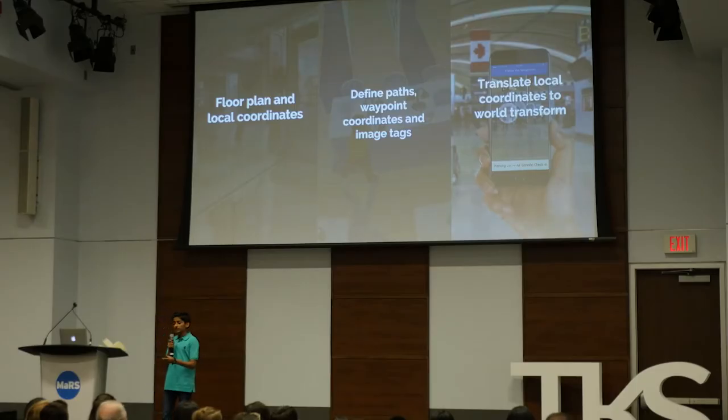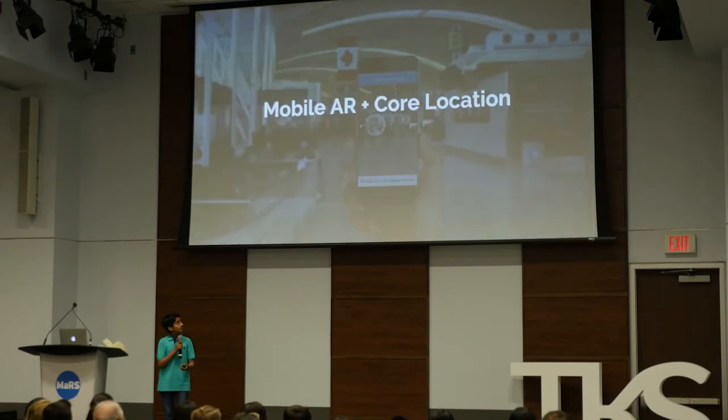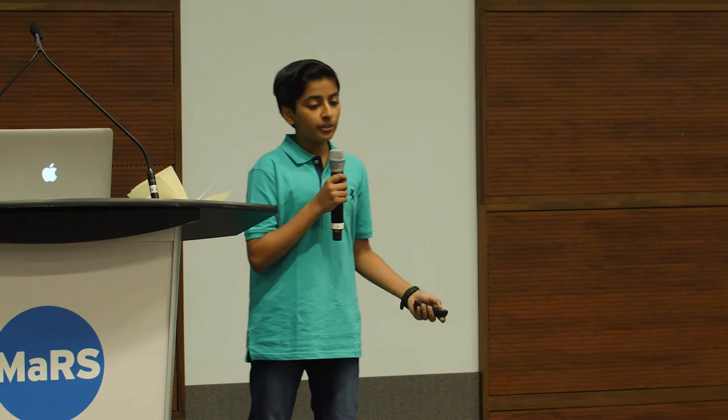The last part is to translate the local coordinates from the grid into world transformed targets. This is done through Apple's Core Location API. Using Core Location, I take the data from the local grid and make it into a world transform by calculating rotation, translation, and bearing. Once you've reached your destination, you're able to learn more about the location and experience further augmented reality content.